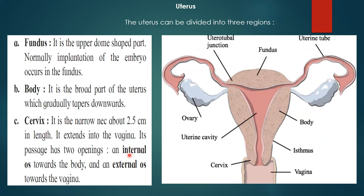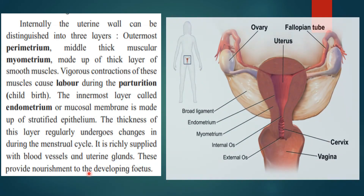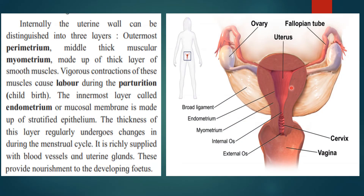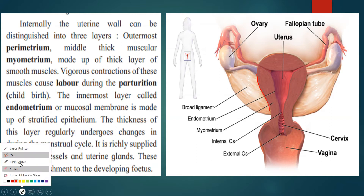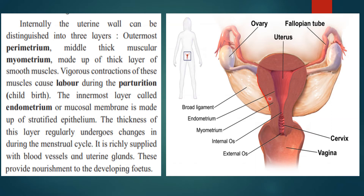The cervix portion consists of internal os and external os. The uterus itself consists of three layers. The outer layer, highlighted here in red, is the perimetrium. Internal to the perimetrium is the myometrium. Internal to the myometrium is the endometrium. So the uterine wall consists of three layers: outermost perimetrium, middle thick muscular myometrium, and innermost endometrium.